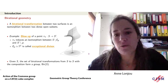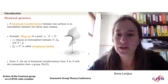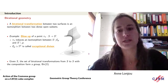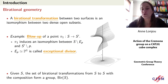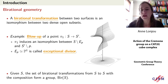Why are we interested in birational transformations? In algebraic geometry, classifying varieties up to isomorphism gives too many classes — it's too rigid. The good notion to classify them is up to birational transformation, so these maps are really important in algebraic geometry.